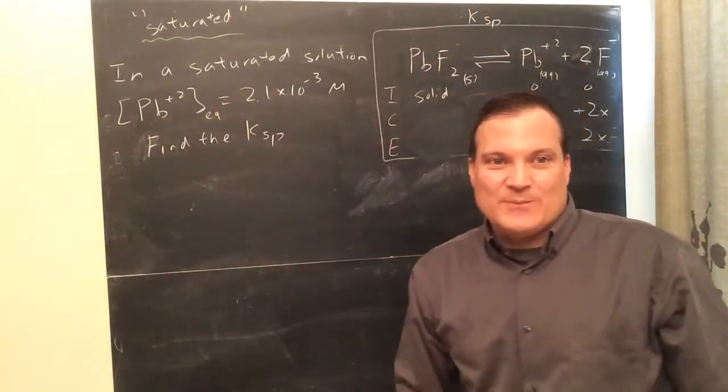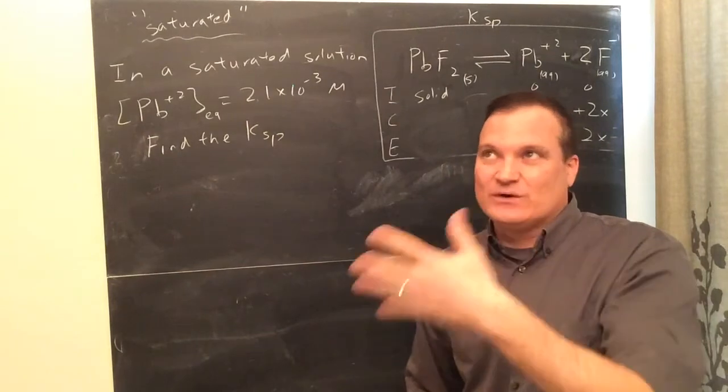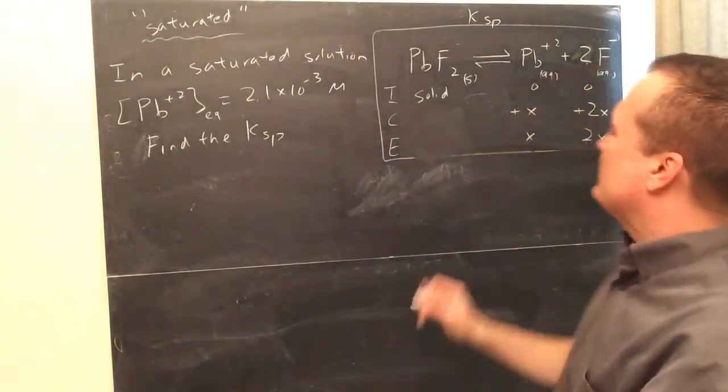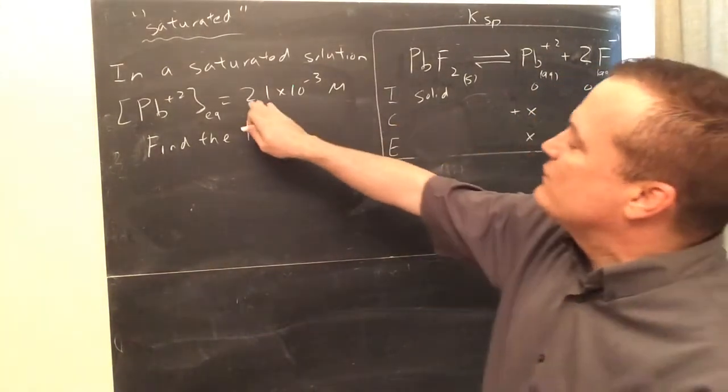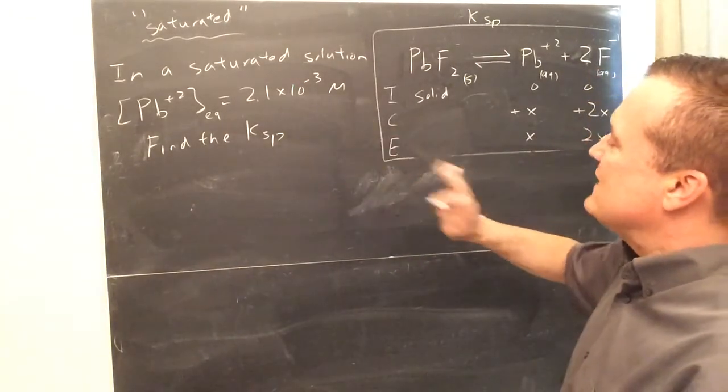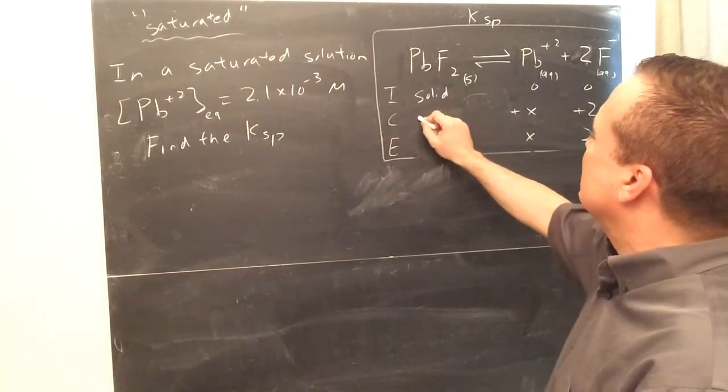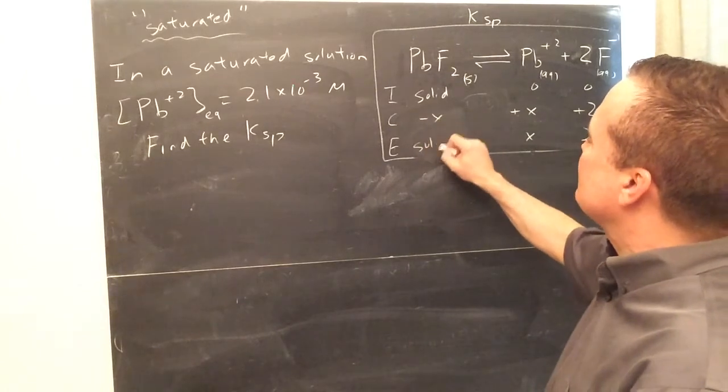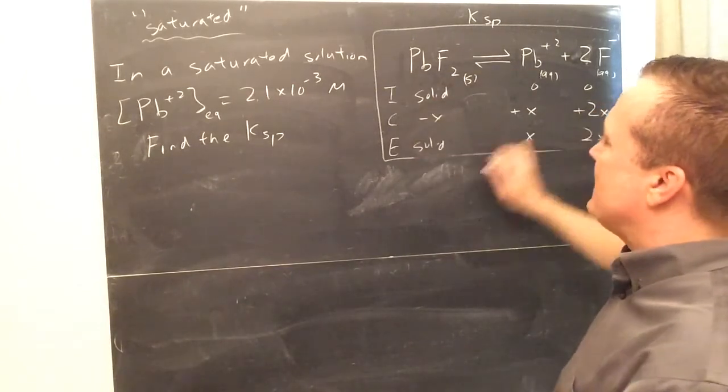So, let's just say that on this problem, they did not give you the KSP, but instead they told you, in a saturated solution, that was it. Or they might say, at equilibrium. In the gas law problem, the gas law, the gas equilibrium, they could say, at equilibrium, we know that Pb plus 2 equals 2.1×10 to the negative 3.